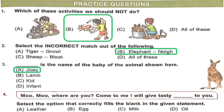Question 4: 'Moo moo, where are you? Come to me, I will give tasty dash to you.' Who does moo moo? It's cow. And what does cow give us? It's milk. So the right answer is Option C.